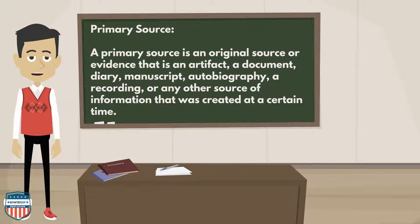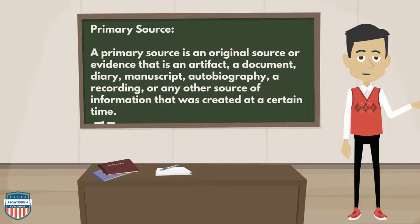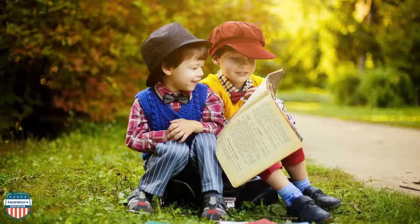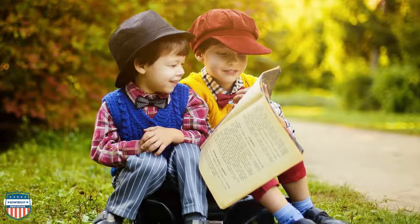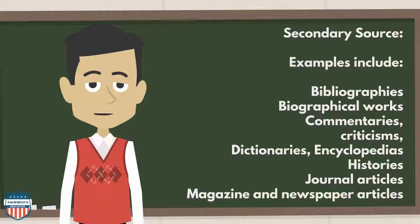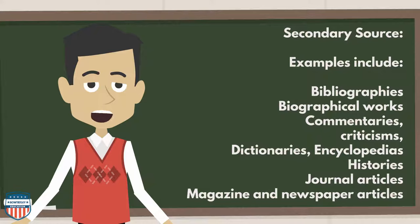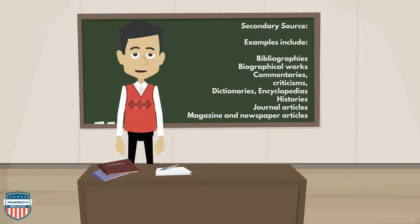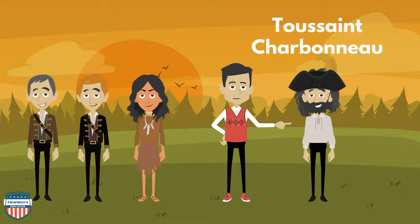What exactly is a primary source? A primary source is an original source or evidence — an artifact, a document, a diary, a manuscript, an autobiography, a recording, or any other source of information created at a certain time. Secondary sources are accounts written after an event that utilize hindsight — interpretations and evaluations of primary sources. Examples of secondary sources include bibliographies, biographical works, commentaries, criticisms, dictionaries, encyclopedias, histories, journal articles, and magazine and newspaper articles.